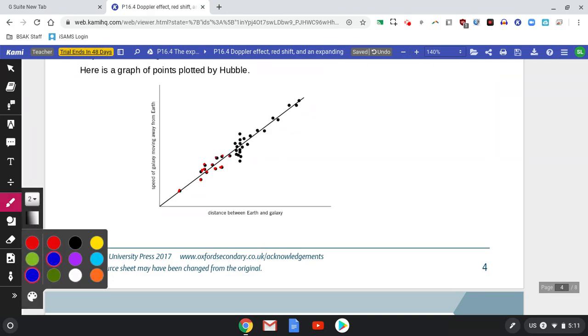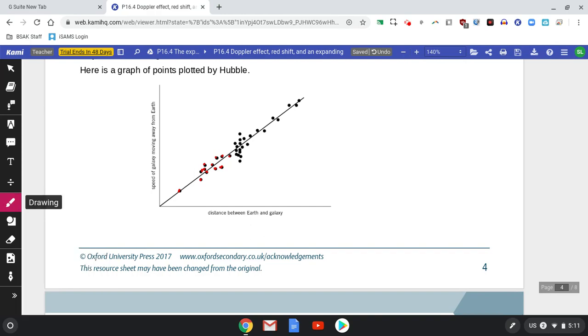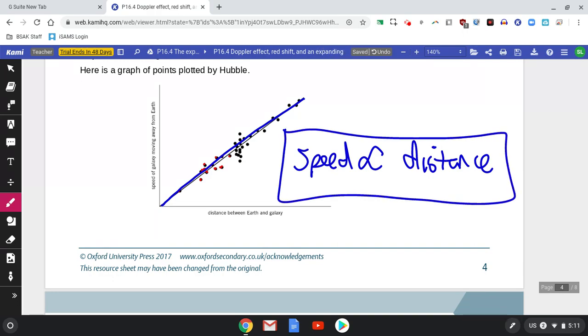And noticed it was a directly proportional relationship. It's a straight line. So the speed—this is Hubble's law—speed is directly proportional to distance from Earth. That is Hubble's law.